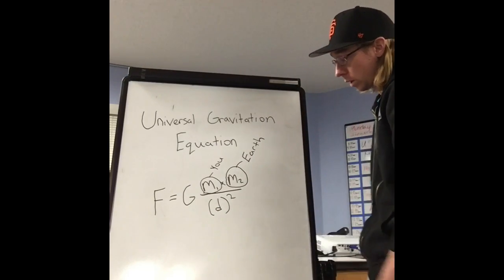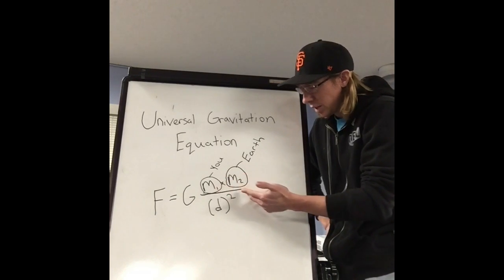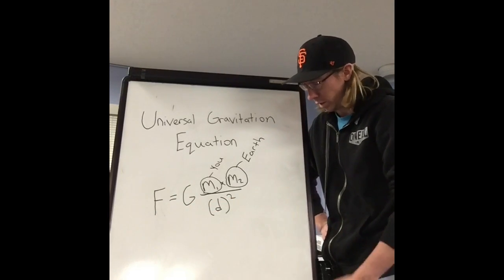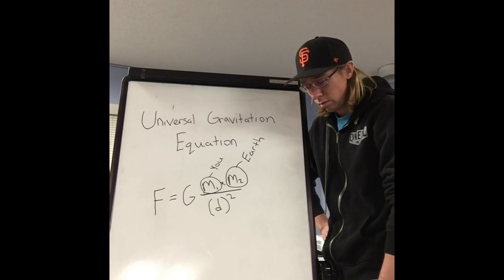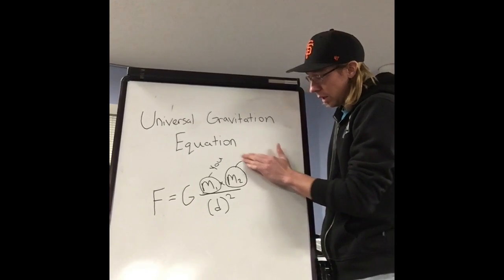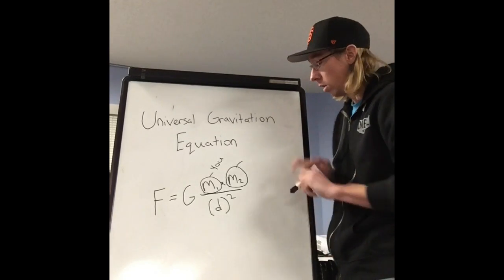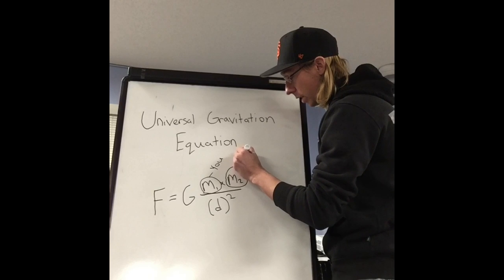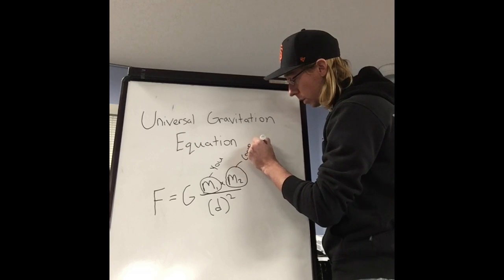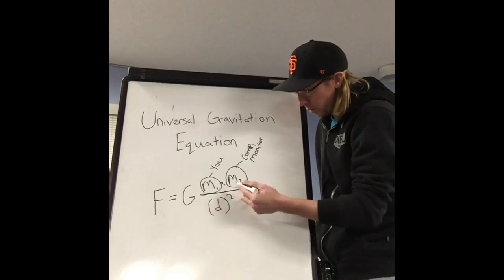So you may be looking at this equation and thinking, well, I mean, this is basically saying that the mass of any two objects could have a gravitational pull on each other. And this is right, actually. For example, what if m2 was the tablet that you're holding in your hands right now, or the computer monitor that you're sitting in front of right now?